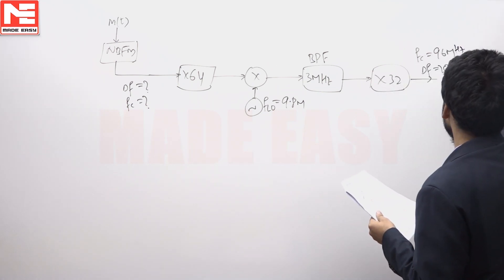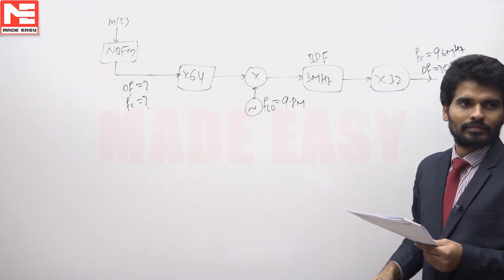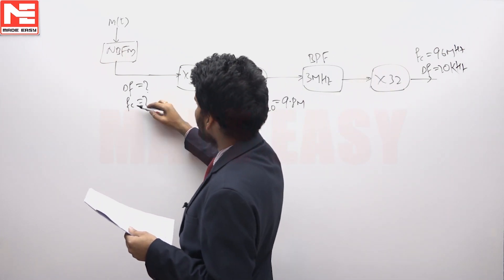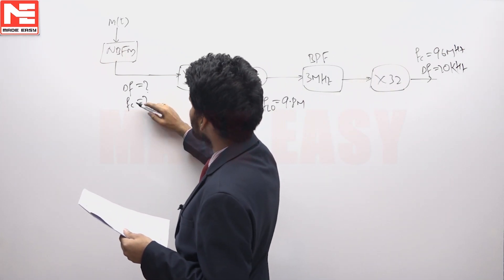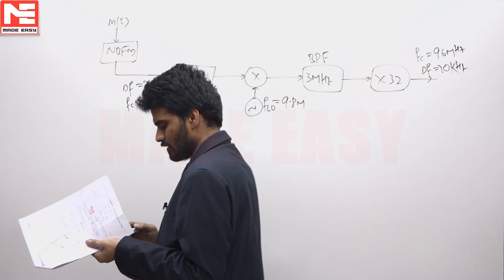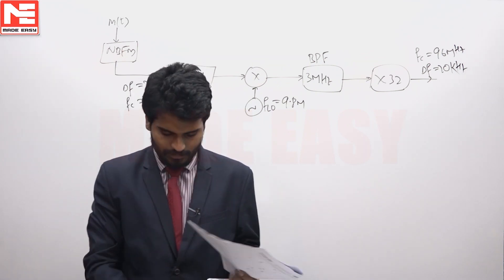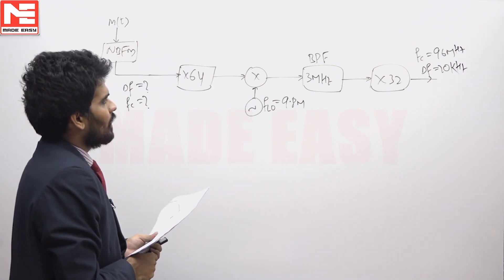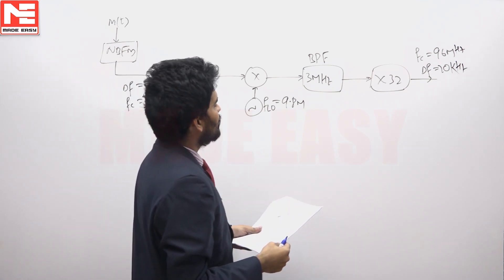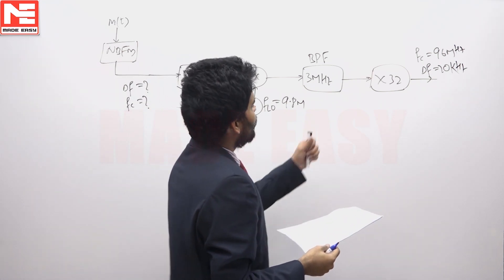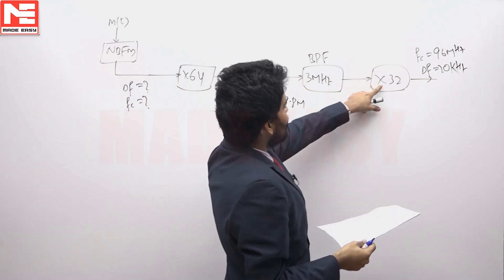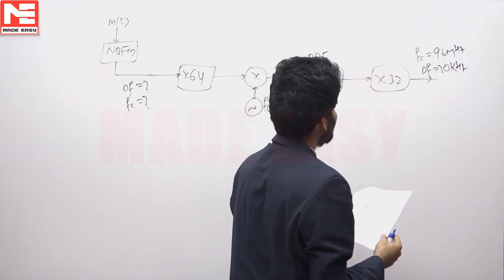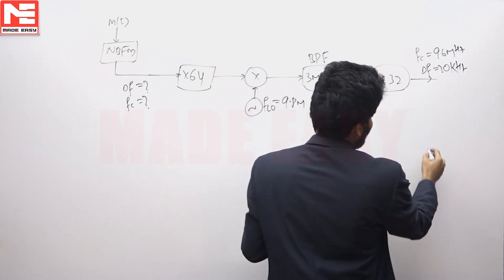The delta f is 20 kilohertz at the final output. We have to find what the delta f and carrier frequency are at the very initial stage.